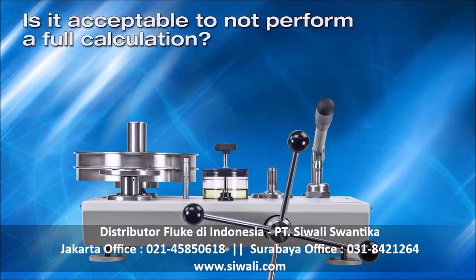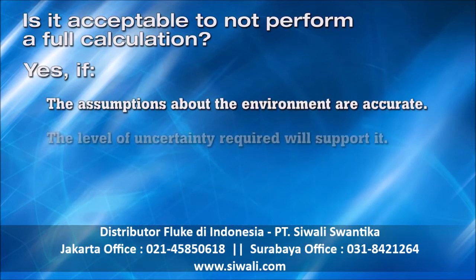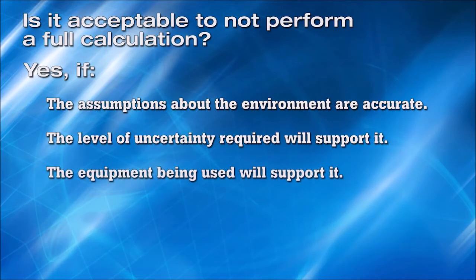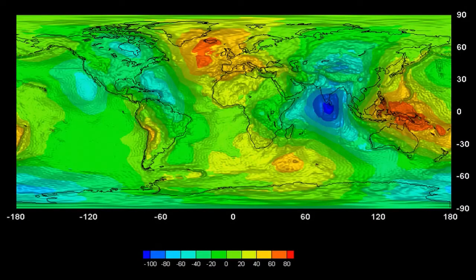The question becomes: is it ever acceptable to use a pressure balance in this fashion? Sure, it's quick, but is it right? The answer is yes, if the assumptions about the environment are accurate, the level of uncertainty required will support it, and the equipment being used will support it. As stated before, there are a number of factors that impact the pressure being generated. Perhaps the biggest is the local acceleration of gravity. Pressure is defined as force divided by area, and with a pressure balance, the force is generated by the masses being accelerated downwards by gravity.